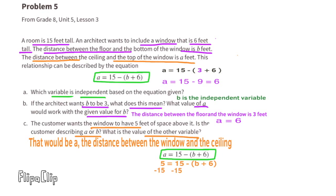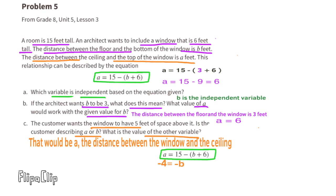Subtract 15 from both sides: 5 minus 15 is negative 10. The equation reads negative 10 equals negative B plus 6, then negative B minus 6. Add 6 to both sides: negative 4 equals negative B. Multiply by negative 1: 4 equals B. So B equals 4. When the distance between the ceiling and the window is 5, the distance between the floor and the window is 4.